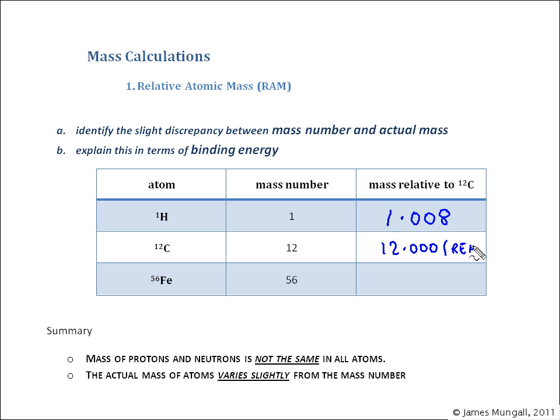There's nothing special about carbon, it's just been chosen as a standard. And then the iron, well that's not exactly 56. That's got a bit more binding energy because there's more protons and neutrons in there and so its mass is slightly lower and that's 55.935.